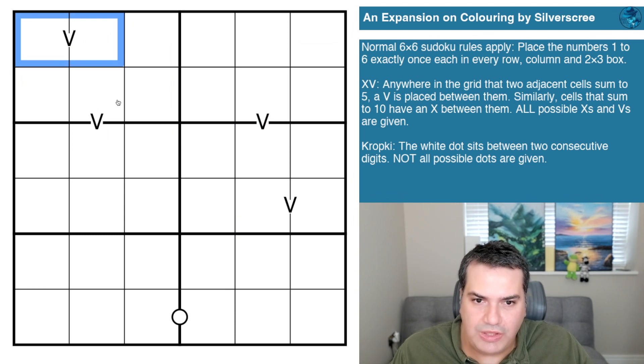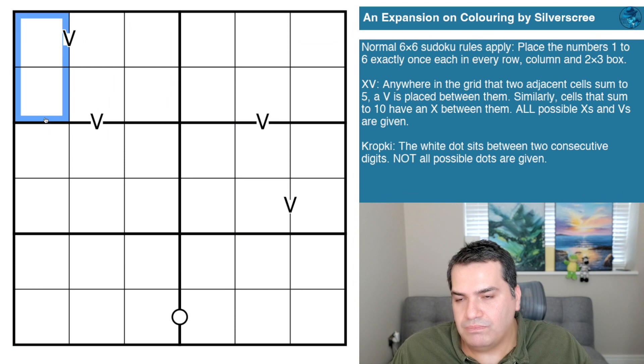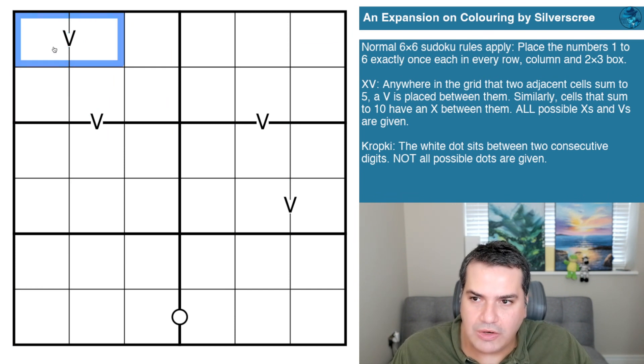Similarly, cells that sum to ten have an X between them. I see none on the grid unless my eyes are deceiving me. All possible X's and V's are given, so negative constraints apply, which also means none of the dominoes here are adding up to ten. So four and six are probably the only two that can add up to ten in a six by six Sudoku puzzle, and they are never orthogonally adjacent.